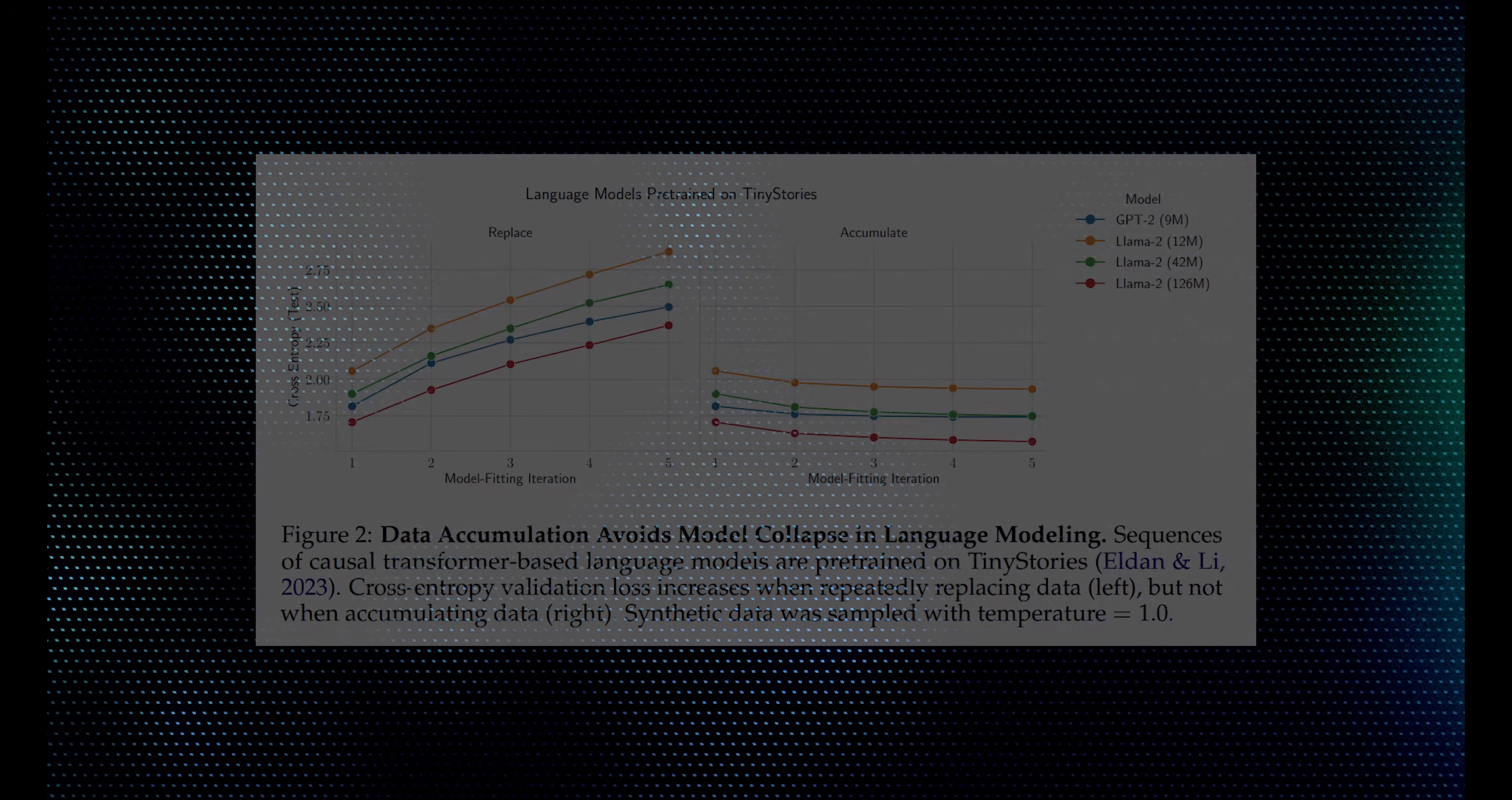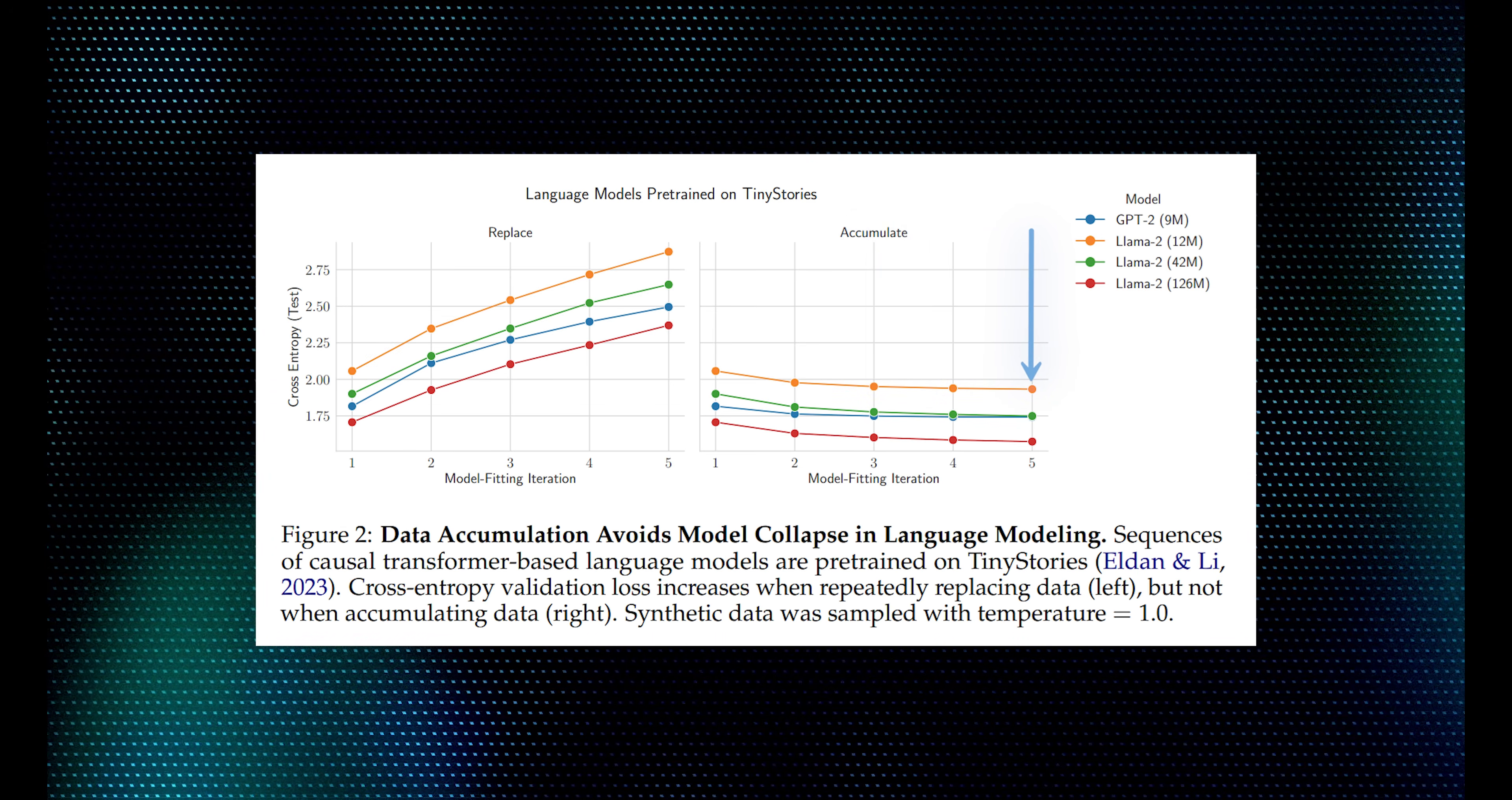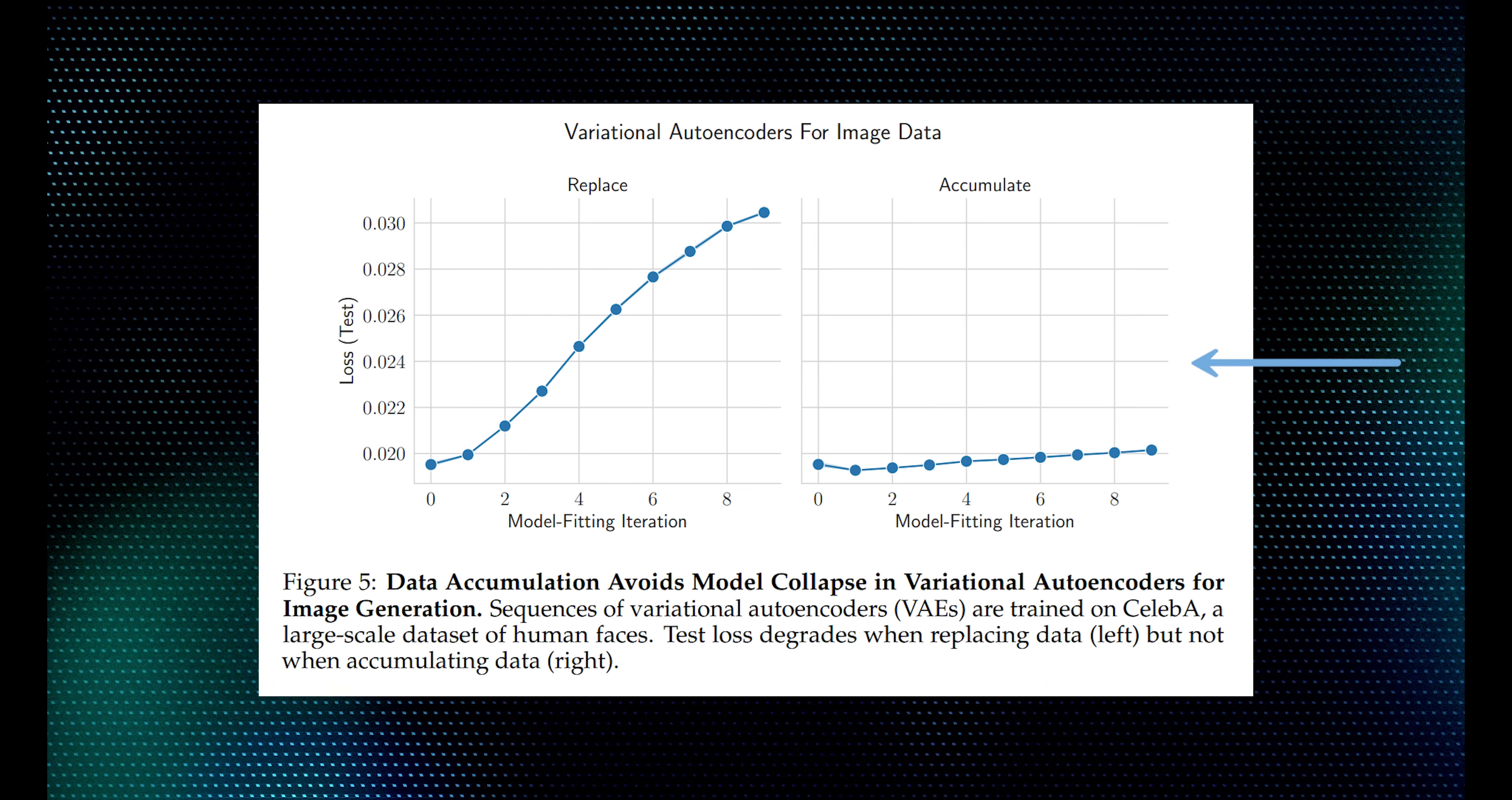To show this, they did some experiments on language models. We see that the test loss is not diverging in the accumulating case, and in fact, continues to improve with each generation. Now, for their experiments on variational autoencoders, they observed some degradation. However, since their definition of model collapse is a diverging test loss, this still counts as avoiding model collapse.